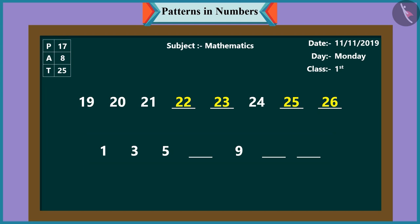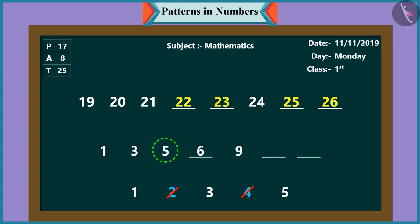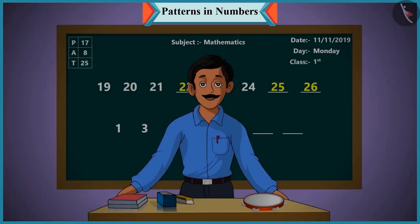Chutki, can you complete this pattern? Yes. In this pattern, six comes after five. Chutki, see the rules of this pattern. After one, it is not two, but three. After three, it's not four, but five. This pattern proceeds with alternate numbers. Yes. So, like this, after five comes seven and not six. Yes. Well done, Chutki.